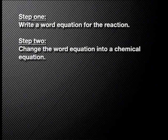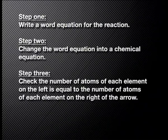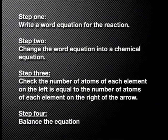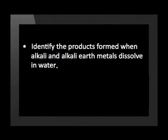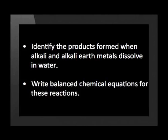Step 2: change the word equation into a chemical equation. This is where your knowledge of elemental symbols and of writing formulae will be most useful. Step 3: check that the number of atoms of each element on the left of the arrow is equal to the number of atoms of each element on the right of the arrow. Step 4: balance the equation by writing numbers in front of the formula. In today's lesson, we will identify the products formed when alkali and alkali earth metals dissolve in water and write balanced chemical equations for these reactions.